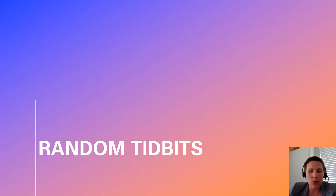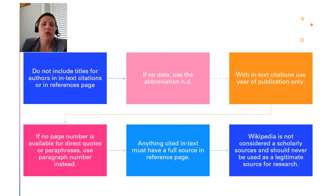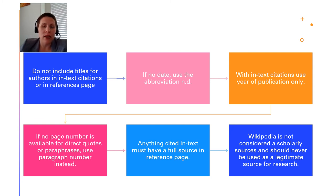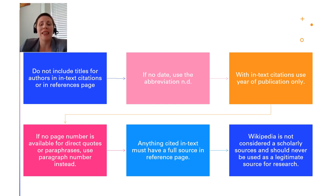Some additional tips for APA citations: do not include titles for authors in in-text citations or on the references page — if the person who wrote it is a doctor, that doesn't matter. If there's no date, use the abbreviation N.D. With in-text citations, use only the year of publication, not the full date. If there are no page numbers available for direct quotes or paraphrasing, use a paragraph number instead. Anything cited in text must have a full source in the references page.